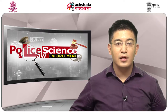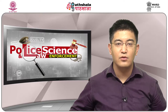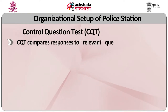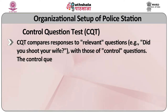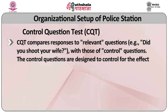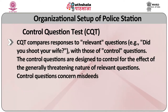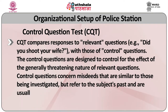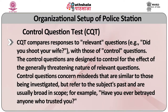Severe questioning techniques are commonly used in polygraph tests. The most widely used test format for subjects in criminal incident investigations is the control question test, CQT. CQT compares responses to relevant questions — for example, 'Did you shoot your wife?' — with those of control questions. The control questions are designed to control for the effect of the generally threatening nature of relevant questions. Control questions concern misdeeds that are similar to those being investigated but refer to the subject's past. For example, 'Have you ever betrayed someone who trusted you?'